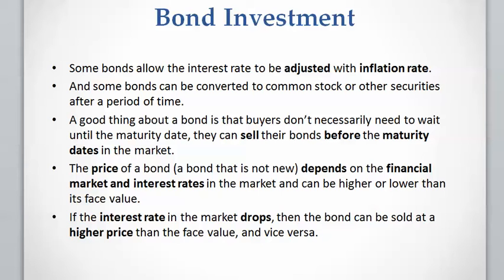For example, if you buy a bond and the interest rate in the market drops, you can sell your bond at a higher price than the face value because the bond has a coupon, meaning you are going to receive a fixed amount of payments per year or per six months. These payments are fixed, so if the interest rate in the market drops, your bond has higher value in the market.